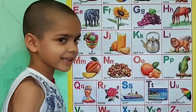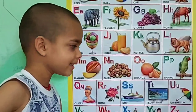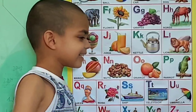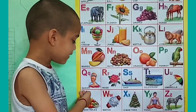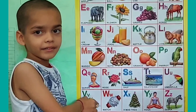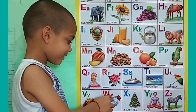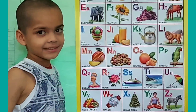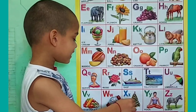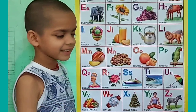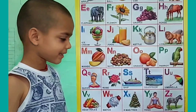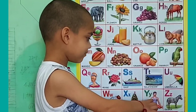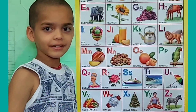P for television, U for umbrella, B for vegetables, W for watch, X for Xmas tree, Y for yoga.